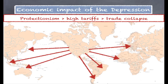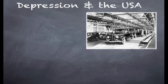American banks stopped making loans to businesses in Europe. America had replaced Britain as the world's banker. That caused European businesses to fail, and many banks asked for their loans back as they were in trouble. That caused huge crises, especially in Germany, as we will see.